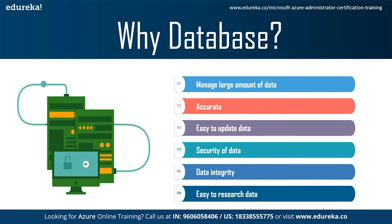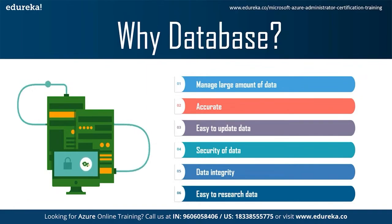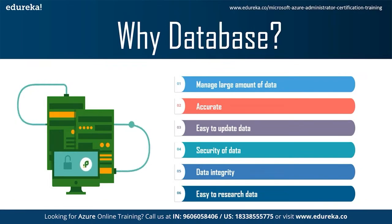Fourth is security of data — databases have various methods to ensure security, including user logins required before accessing a database and various access specifiers that allow only authorized users access. Fifth is data integrity, ensured by using various constraints for data, making sure data is accurate and consistent. The sixth reason is easy to research data — it is very easy to access and research data using data query language, which allows searching any data in the database and performing computations on it.